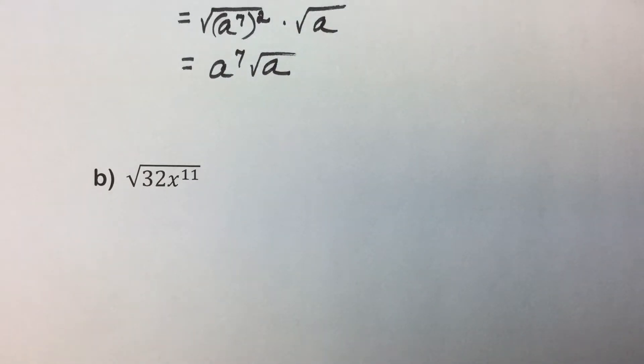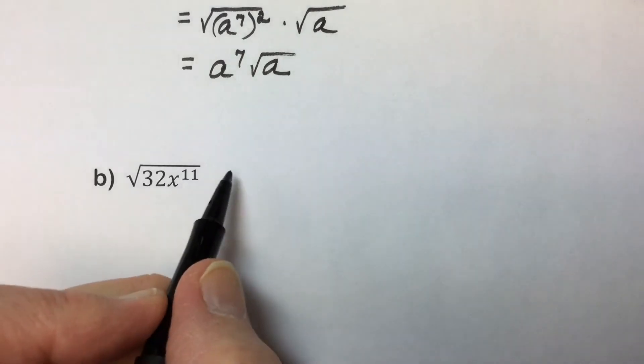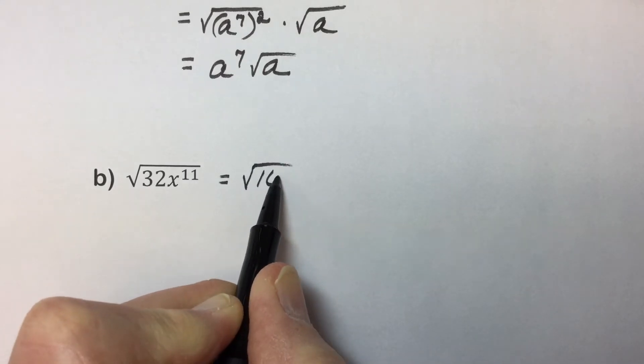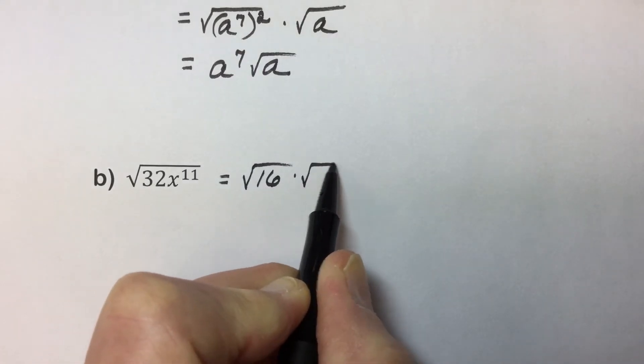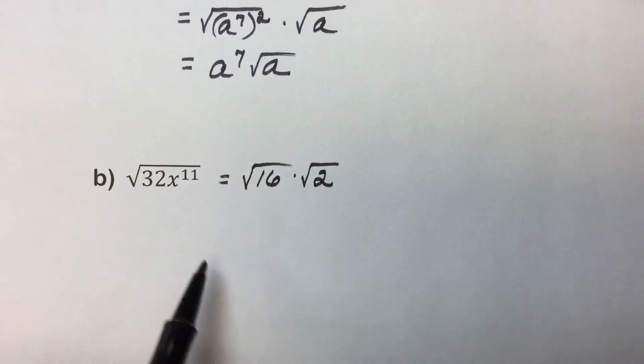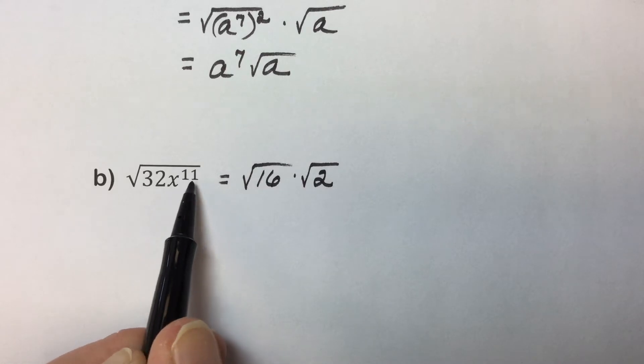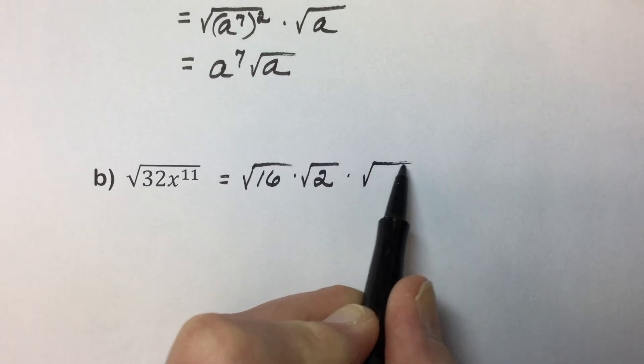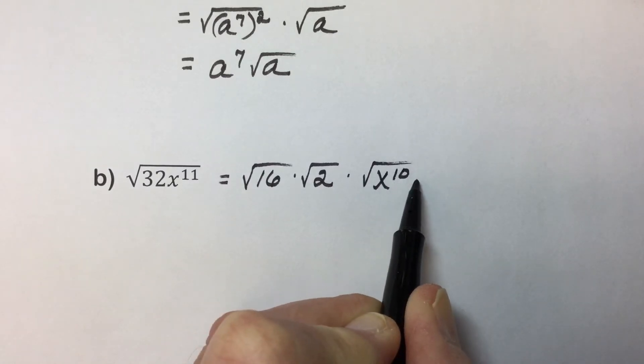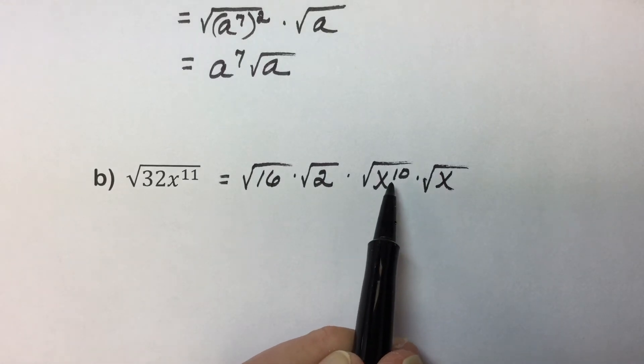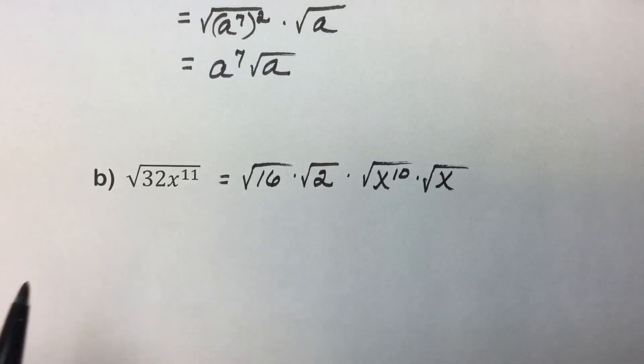In this next example, we'll break this down into factors that are perfect squares. Thirty-two can be broken down into sixteen, a perfect square, and two, since two times sixteen is equal to thirty-two. And here we have a variable with an odd power, so we'll break that up into x to the tenth times x, since x times x to the tenth is x to the eleventh.